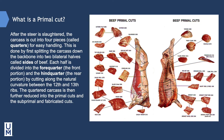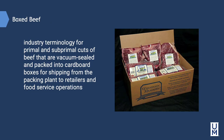So what is meant by the term primal cut? After the steer is slaughtered, the carcass is cut into four pieces called quarters for easy handling. This is done by first splitting the carcass down the backbone into two bilateral halves called sides of beef. Each half is divided into the forequarter and hindquarter by cutting along the natural curvature between the 12th and 13th ribs. The quartered carcass is then further reduced into primal, subprimal, and fabricated cuts. Boxed beef is industry terminology for primal and subprimal cuts that are vacuum-sealed and packed into cardboard boxes for shipping from the packing plant to retailers and food service operations.